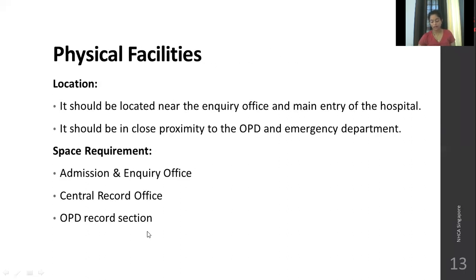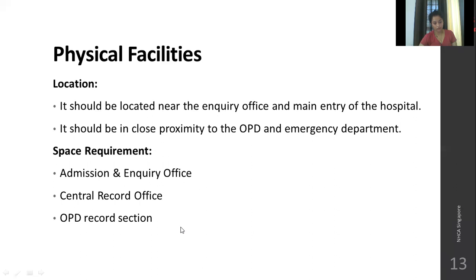Regarding physical facility: the medical records department should be located near the inquiry office and main entry of the hospital, in close proximity to the OPD and emergency department. Space requirements: the admission and inquiry office requires 125 to 175 square feet. The central record office requires two to three square feet per bed. The OPD record section also requires an average of two to three square feet per bed.